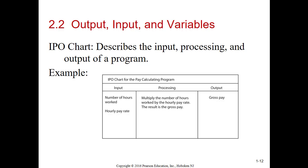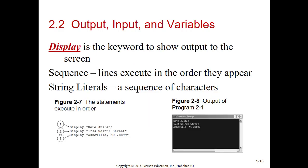The IPO chart, you'll see examples of this in here. I don't require you to do this, but this is good documentation to help you write your programs. I already told you about the display keyword. Notice what happens at the bottom of the page where it says 1, 2, and 3. The program's going to execute step one first, so it displays Cade Austin. Then it's going to go down to the next line, display 123 Walnut Street. Then go down to the next line, Asheville, North Carolina, 28899. And then the program's going to end.